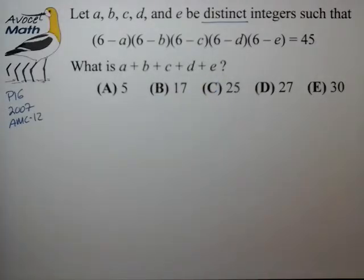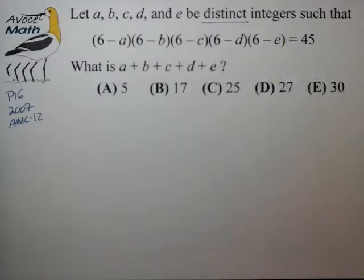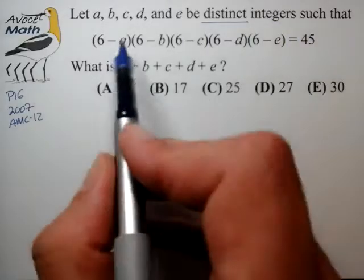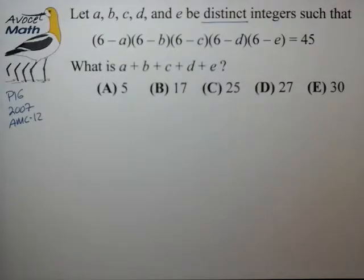As an initial survey of the problem we just have to remind ourselves we're dealing with distinct integers, integers positive and negative. We have five unknowns and one equation so that's quite a large disparity, a little more than what we're used to in these types of problems.